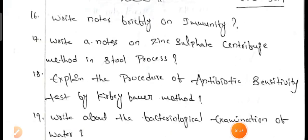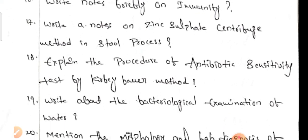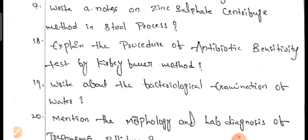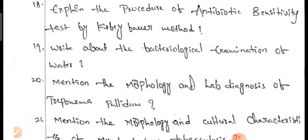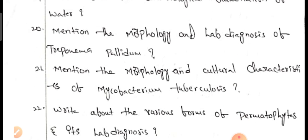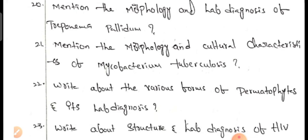Next, for six-mark questions: write notes briefly on immunity, write short notes on zinc sulfate centrifuge method in stool processing, explain the procedure of antibiotic sensitivity test by Kirby-Bauer method, write about the biological examination of water, and mention the morphology and lab diagnosis of Treponema pallidum.